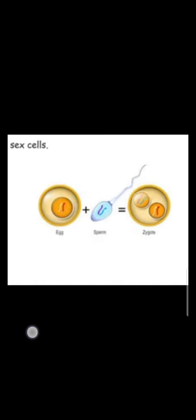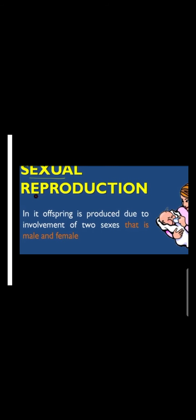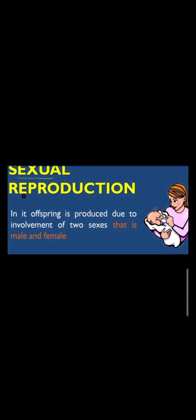When the two gametes — sperm and ovum — unite, they form a single cell called a zygote. This process is known as fertilization. The zygote then develops into an embryo. So sexual reproduction is the development of offspring due to the involvement of two sexes, male and female.